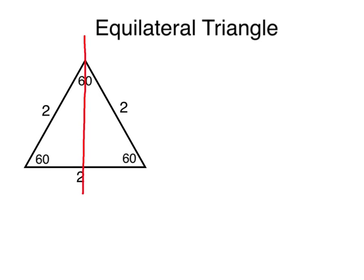This line here is called the altitude. Now this altitude creates a 90 degree corner right there. This edge here that was originally 2 inches got sliced in half, so now it's only 1 inch. This corner here that was originally 60 degrees got sliced in half by this altitude. It is now 30 degrees.